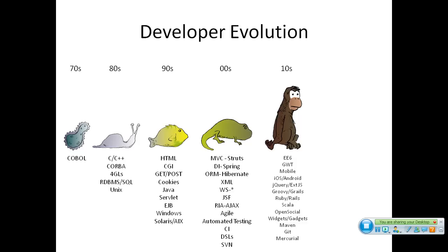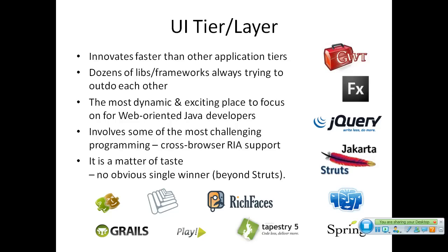Today we're talking about some of these right-hand-column technologies — Google Web Toolkit, various web frameworks — and if you master them all, you're the superhero. The UI tier is where we're focused, and it innovates faster than any other area of application development. There are dozens of players — individuals, small open-source teams, major vendors — always vying for developer attention, and getting a cross-browser application to work really well is some of the most challenging programming.